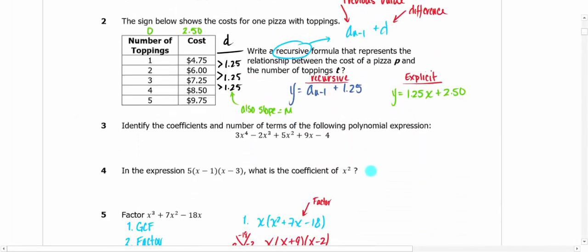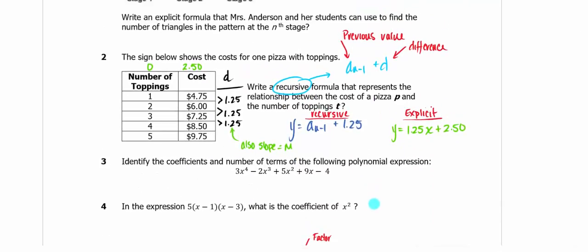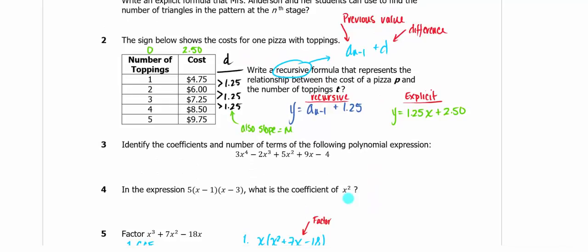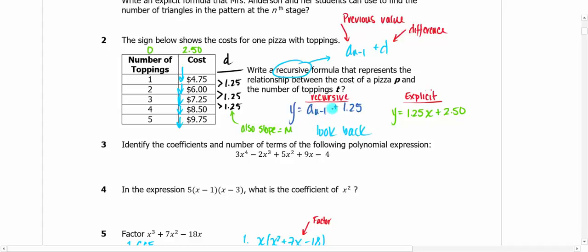One of the first things I want to talk about is recursive and explicit, because we haven't done that in a while — this was the beginning of the semester. Recursive is based on a sequence, some numbers in order going down a list. Recursive means that you have to look back at the previous value to be able to go forward. That's what a sub n-minus-one means.